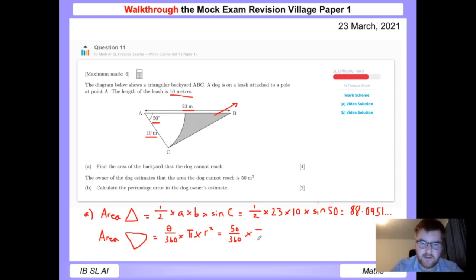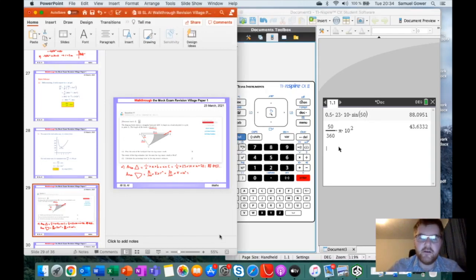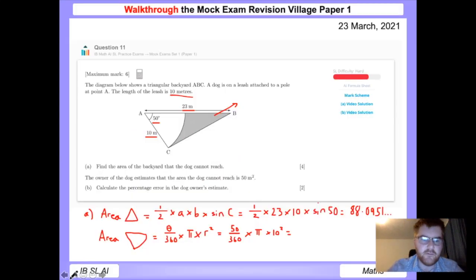Okay, so I get the answer of 43.6332, so I'm just going to write that over here: 43.6332. Show my working—there's a 4 mark question—and in order to work out the shaded area, we take the area of the sector away from the area of the triangle.